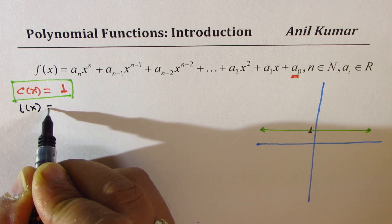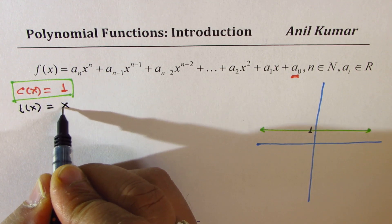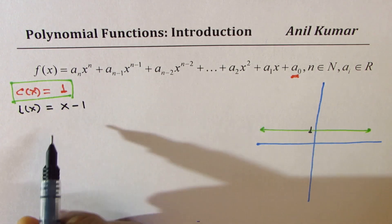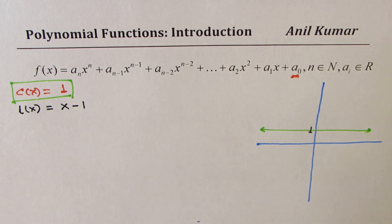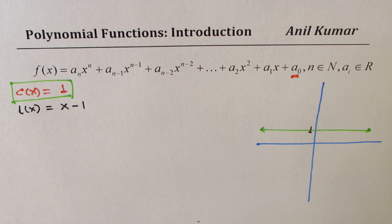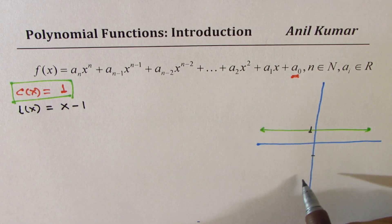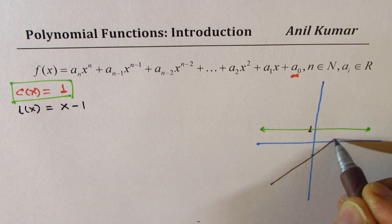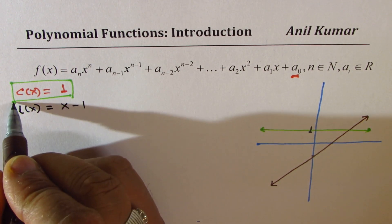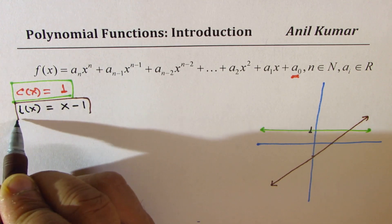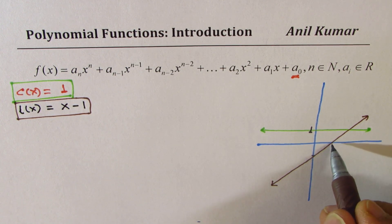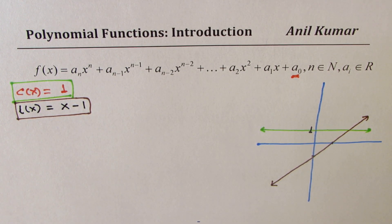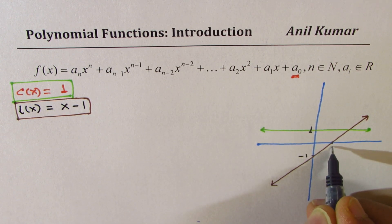Now let me add a linear term and write another function — let's say l(x) equals x minus 1. That will again be a straight line. Let me draw this line in a different color. The y-intercept is one unit down, with a slope of 1, so it will cross at 1. The x-intercepts for us will be plus and minus 1 — this is minus 1 and that is going to be plus 1.